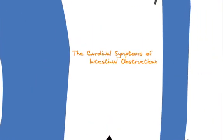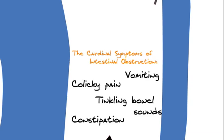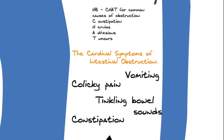Abdominal colicky pain with vomiting, constipation and abdominal distension are cardinal signs of bowel obstruction. Active tinkling bowel sounds are also present on examination. Note the mnemonic CHAT for common causes of bowel obstruction: constipation, hernias, adhesions and tumours.